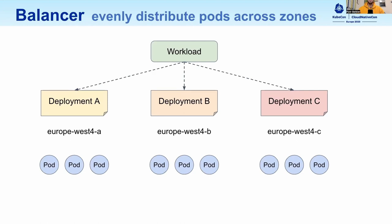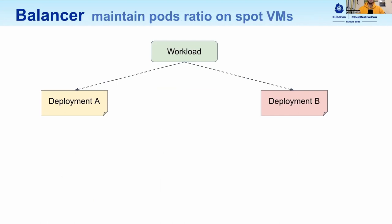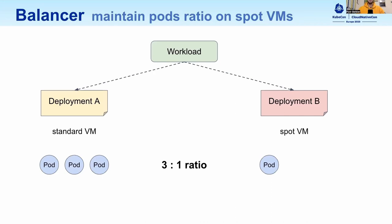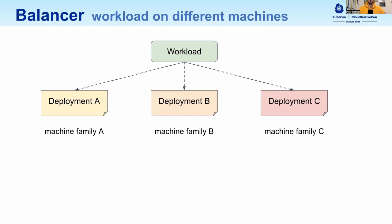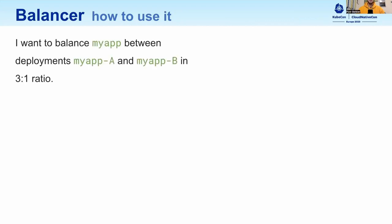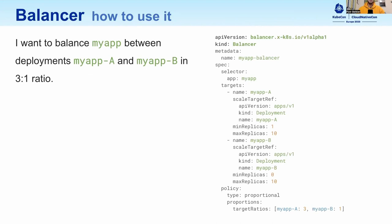When pods are added or removed to the workload, you expect this even distribution to be maintained. Or perhaps you want to run your workload on both standard VMs and spot or preemptible VMs, which are cheaper but less reliable. You would like to always have 25% of pods running on these less reliable VMs, and you expect new pods to be distributed according to the defined ratio. Or perhaps you run your workload on different machine families or there's any other slight difference in configuration. Now that we know when the balancer feature may be useful, let's explore how to configure it. Let's say I want to balance my app between two deployments in a 3 to 1 ratio — the use case for 25% of pods on spot VMs. You can see the balancer.yaml to the right.